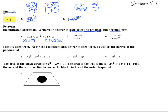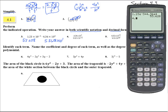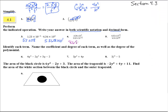Next one: 4.36 times 10 to the third, divided by 5.02 times 10 to the negative 2. As a decimal number, we get 86,852.59. For scientific notation, we take the decimal and move it over — that's 1, 2, 3, 4 places — so that's 8.685259, we can round there, times 10 to the 4th.